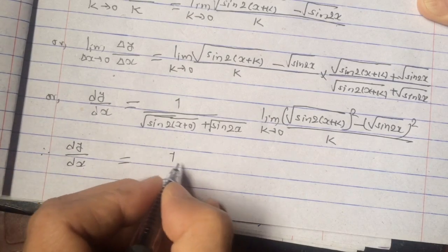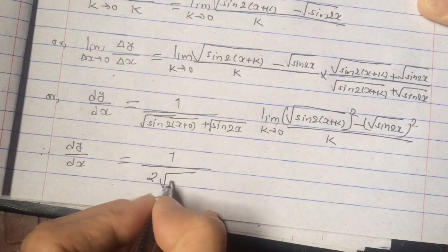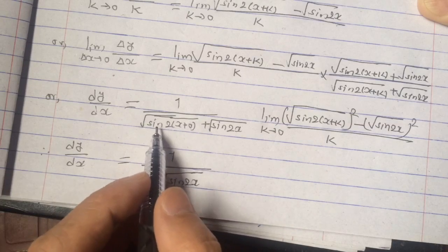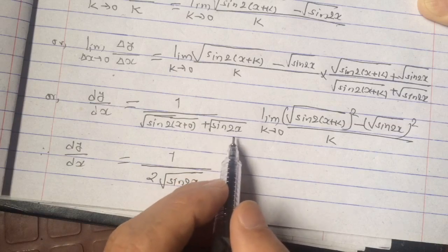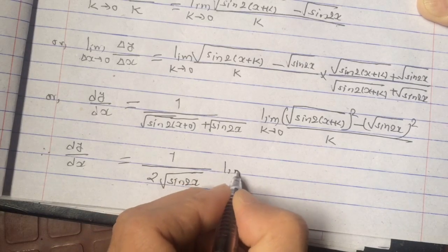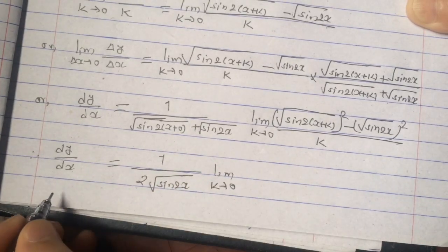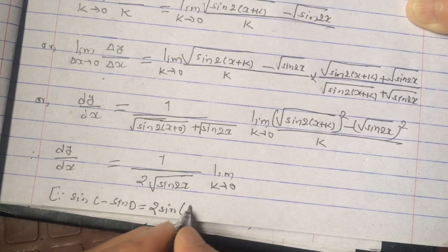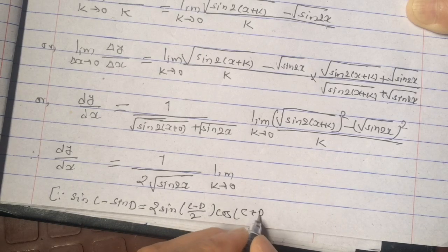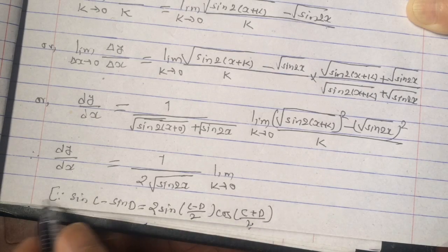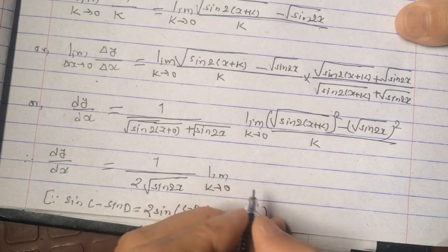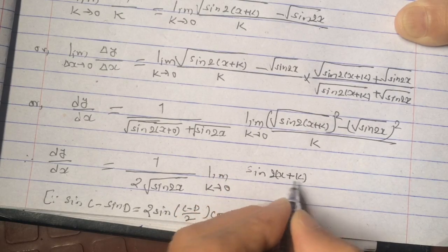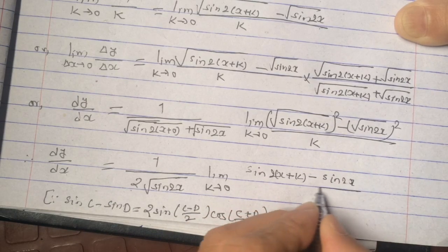Taking k = 0 in the denominator factor outside the limit, it becomes √(sin 2x) + √(sin 2x) = 2√(sin 2x). So we have: dy/dx = 1 / [2√(sin 2x)] × lim(k→0) [sin(2x + k) − sin 2x] / k. Inside the remaining limit, we apply the formula sin C − sin D = 2 sin((C − D)/2) cos((C + D)/2), where C = 2x + k and D = 2x, giving us sin(2x + k) − sin 2x = 2 sin(k/2... wait, let me expand: = 2 sin((2x + k − 2x)/2) cos((2x + k + 2x)/2).